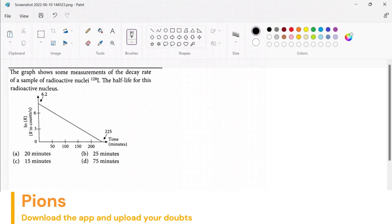The graph shows some measurement of the decay rate of a sample of radioactive nuclei, Iridium-128. The half-life for this radioactive decay will be how much? In case you don't remember, what is half-life?